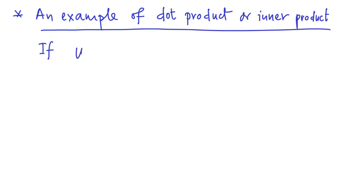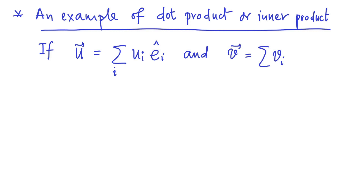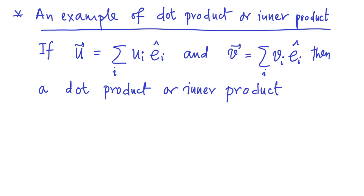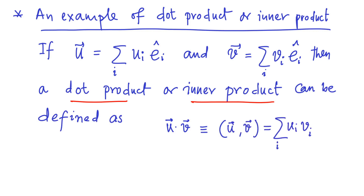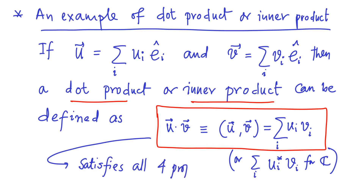If a vector u can be expressed as uᵢ times eᵢ-cap and the vector v is expressed as vᵢ times eᵢ-cap, then a dot product or inner product can be defined as u·v — which means the same thing as (u, v) — equal to the summation of uᵢvᵢ over i. We can check that this definition satisfies all four properties required for it to be an inner product.